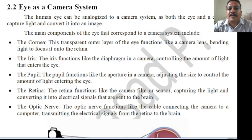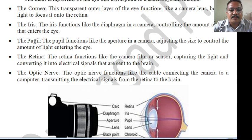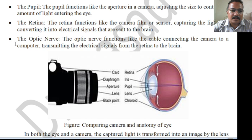The main components of an eye corresponding to a camera system include: the cornea — the transparent outer layer functioning like a camera lens, bending light to focus it onto the retina. The iris functions like the diaphragm, controlling the amount of light entering the eye. The pupil functions like the aperture, adjusting its size to control light. The retina functions like the camera film or sensor, capturing light and converting it into electrical signals sent to the brain. The optic nerve functions like the cable connecting the camera to a computer, transmitting signals from the retina to the brain.